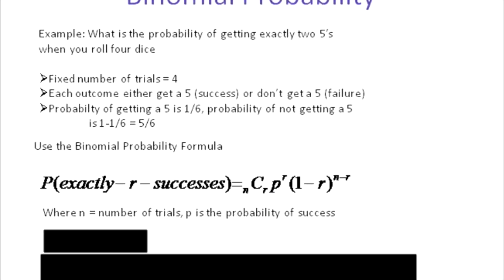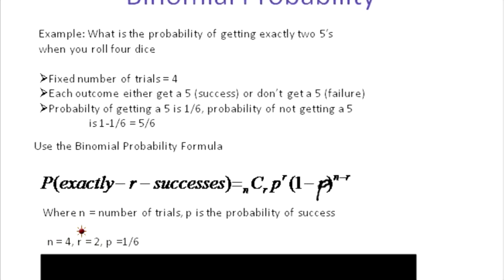There's a misprint — that should say P and one minus P in the formula. So we've got P, the probability of success which is one over six; one minus P which is five over six; and N minus R. In this question: four trials, two successes because we're interested in getting two fives, and the probability of getting a five is one over six.